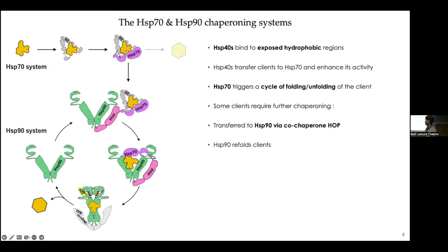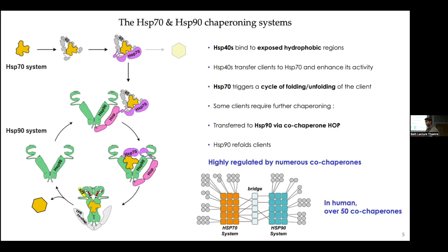The first step is to transfer the complex to HSP90, which is done by the co-chaperone HOP that physically connects HSP70 to HSP90. The client is then transferred, and upon ATP binding HSP90 closes and recruits new co-chaperones that help the folding of the client. In humans this is even more complicated because we have over 50 different co-chaperones modulating and regulating different steps along this pathway, and understanding those co-chaperones is what we are interested in.